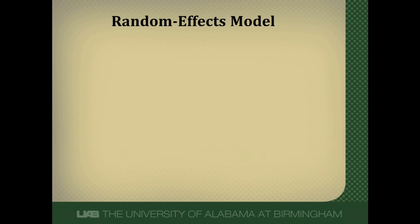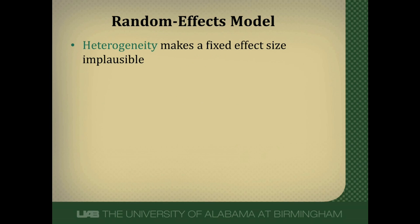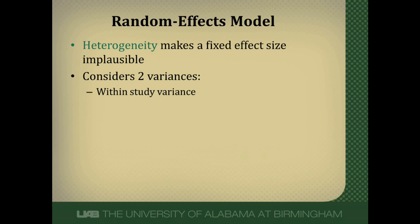A random effects model, on the other hand, has a different philosophy. Heterogeneity — which is differences among studies that are not due to chance alone — is always present to some degree. Studies are done at different years, in different populations, often in different countries, so it makes sense that studies are different. Random effects believes that because of this heterogeneity, any fixed effect size among studies just doesn't seem plausible. It considers two variances among studies: within-study variance, or the role of chance and sampling error, but also between-study variance, or heterogeneity.